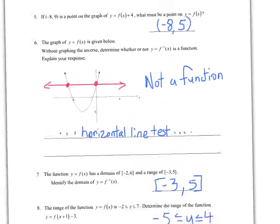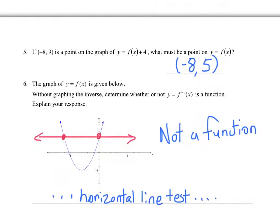Okay, and here's the next page. Question 5: If minus 8, 9 is a point on the transformed graph, careful of that, on the graph of f of x plus 4, what must be a point on y equals f of x? In other words, negative 8 comma 9 is transformed. It's the result of a transformation.